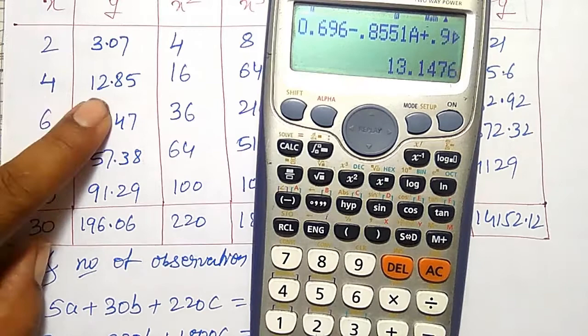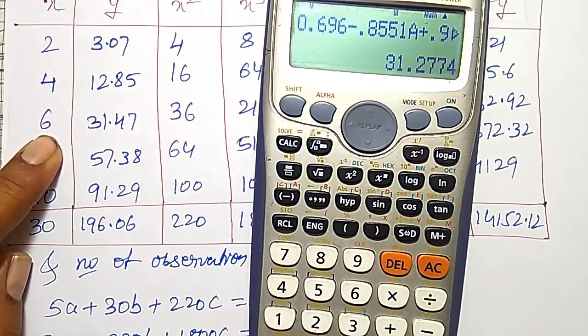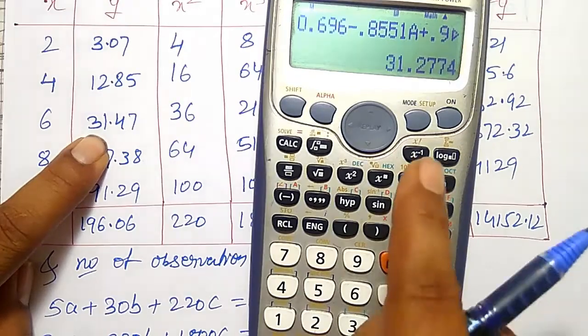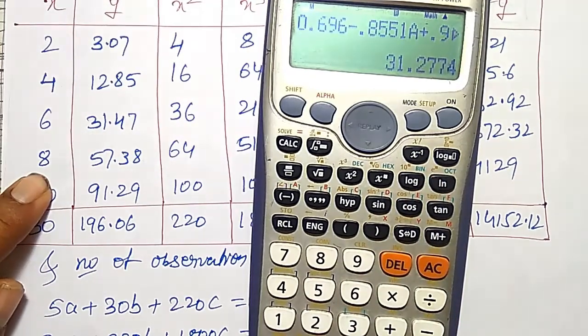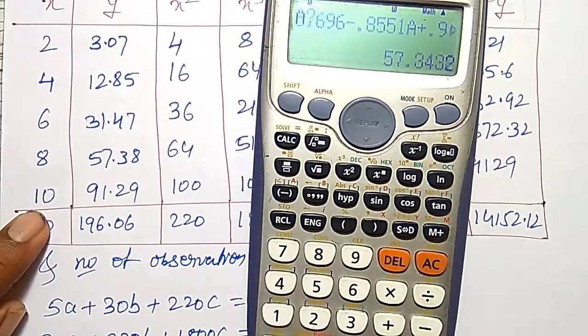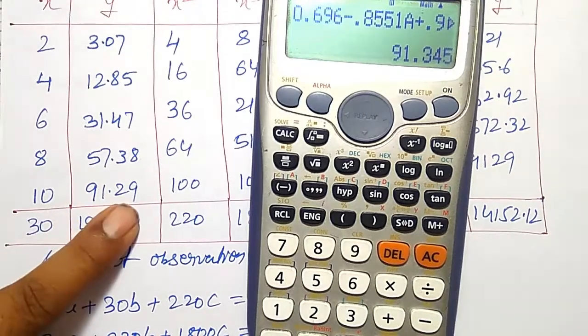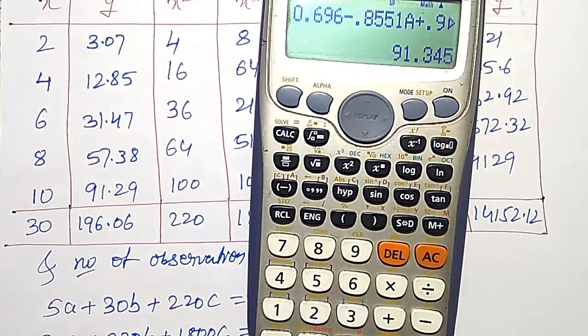Again for 4, 12 point. Like that, for 6 you can verify, it is 31.27, here it is 47. Then again for 8, 57.34, here it is 38. And for 10, it is 91.34 and 29. Nearest value you should get. Like that you can verify your answer.